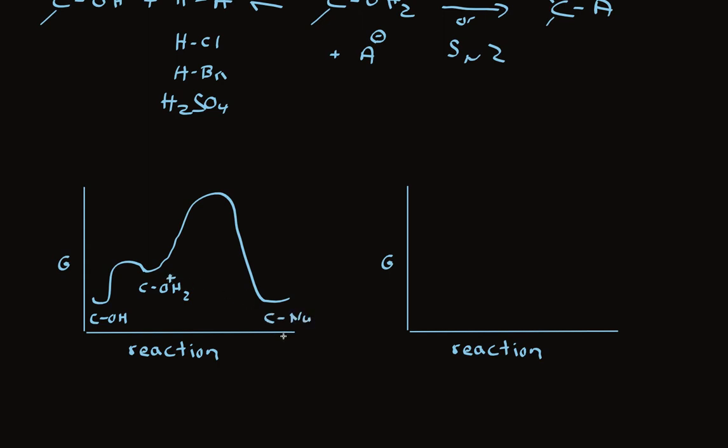For the SN1 reaction, there's an intermediate formed. If an alcohol is a substrate, there are two intermediates formed. So the use of acid with alcohols adds a step on early protonation of the alcohol to turn it into a good leaving group, and then the chemistry proceeds as normal.